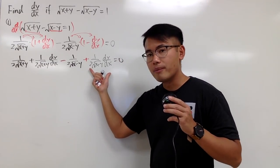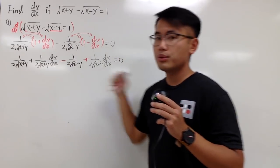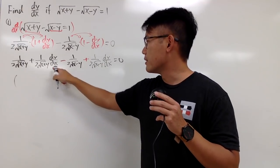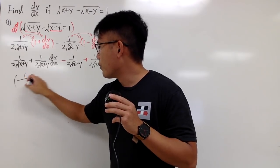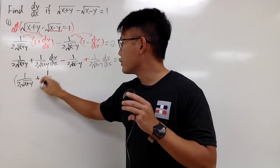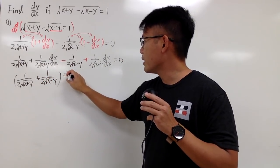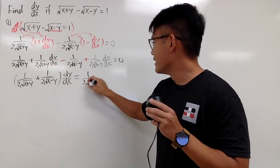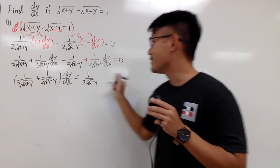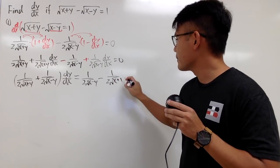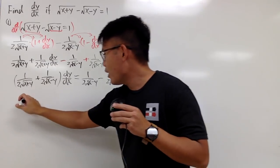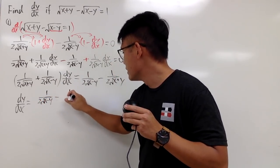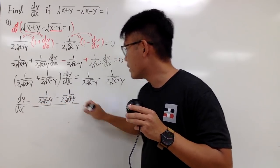I'm going to leave both dy/dx terms on the left-hand side and bring the other two terms to the right side. Factoring out dy/dx from the left gives: [1 over 2 square root of (x plus y) plus 1 over 2 square root of (x minus y)] times dy/dx equals 1 over 2 square root of (x minus y) minus 1 over 2 square root of (x plus y). Then we divide both sides to isolate dy/dx, giving us 1 over 2 square root of (x minus y) minus 1 over 2 square root of (x plus y), all over 1 over 2 square root of (x minus y) plus 1 over 2 square root of (x plus y).